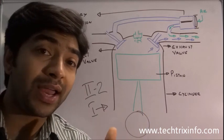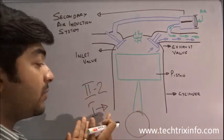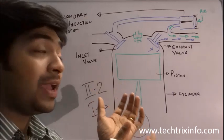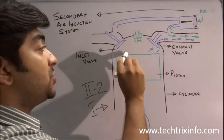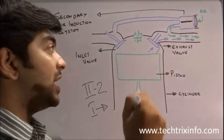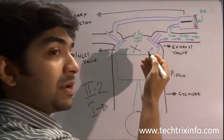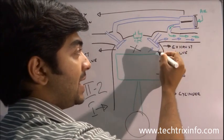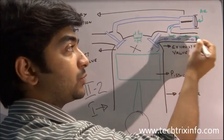You all know how an engine works. In a petrol engine, we have the primary air induction system where air mixes with fuel and is pushed into the combustion chamber. The spark happens, combustion occurs, and after combustion the exhaust valve opens and the exhaust gases go out through the exhaust port.